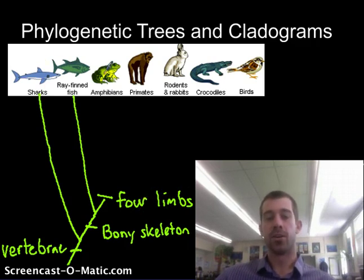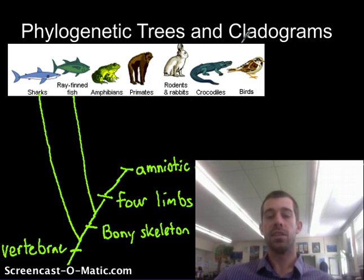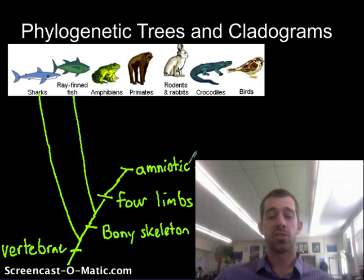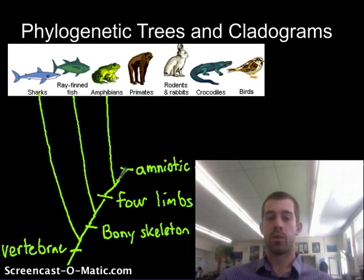We're looking for a trait that all of these organisms have but the amphibian doesn't. It turns out there is a type of egg called the amniotic egg that all of these organisms have — you could think of it like an egg with yolk. Rodents and primates don't actually lay eggs, but they basically keep their eggs inside of them, so they have this structure in a slightly different form. Whereas amphibians don't have a yolk in the eggs they produce. So the ancestors of amphibians must have broken off from the rest after the development of four limbs, but before the development of the amniotic egg.